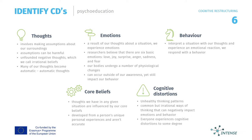Our brains are constantly using thoughts to make interpretations about the world around us. When we see, hear, touch, smell or taste something, our thoughts will tell us what it all means. Without thoughts, we would be hopelessly lost. Part of thoughts involve making assumptions about our surroundings — sometimes these assumptions can be harmful.